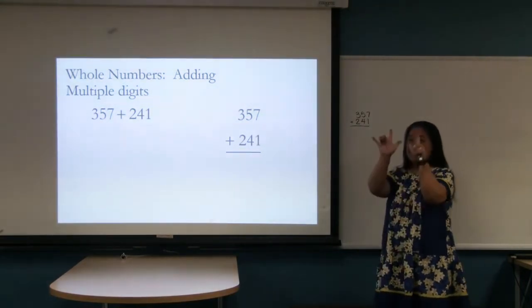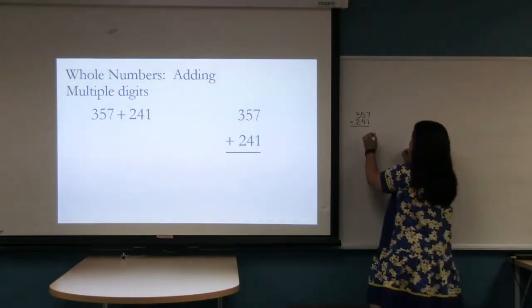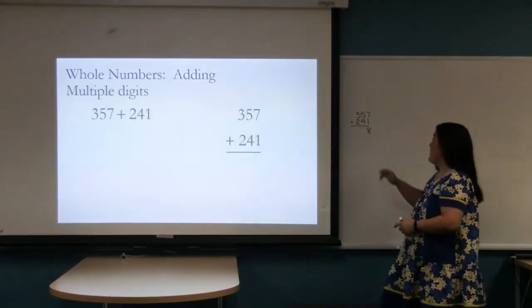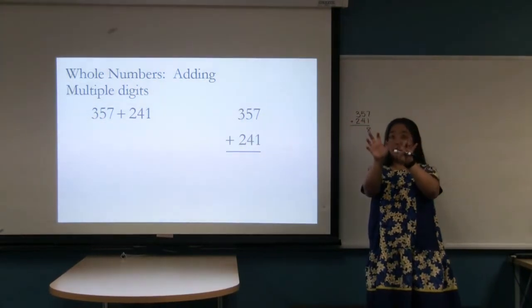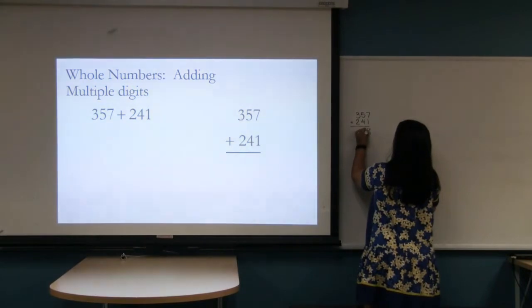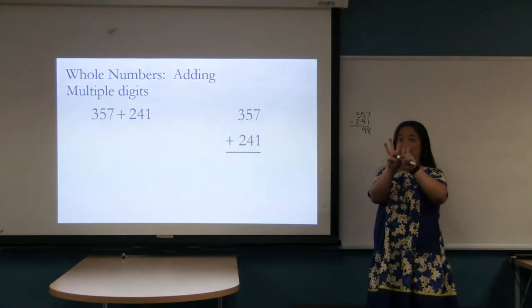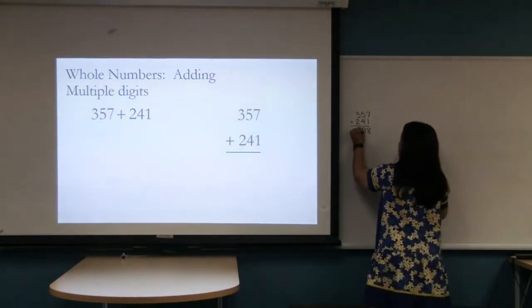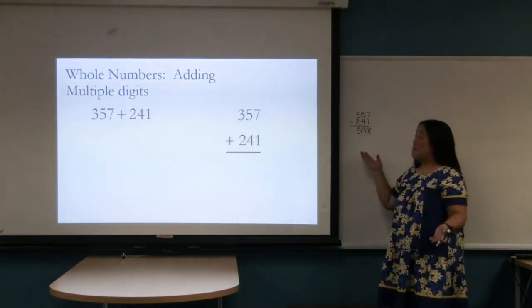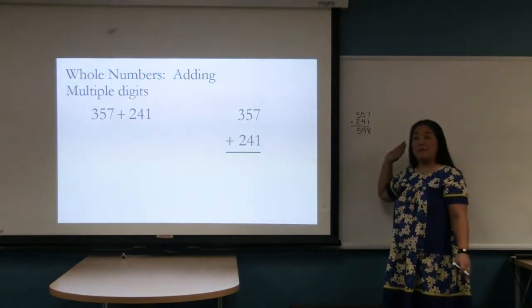So we're going to take seven fingers plus one finger and by their powers combined we'll now have eight fingers. Adding going down starting from the right heading towards the left. Five fingers and four fingers by their powers combined will give us nine fingers. Three fingers and two fingers by their powers combined will give me five fingers. And that is how we are going to add multiple digit numbers going down and then working our way slowly from right to left.